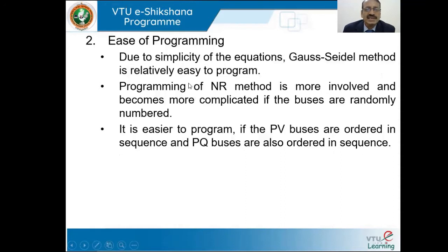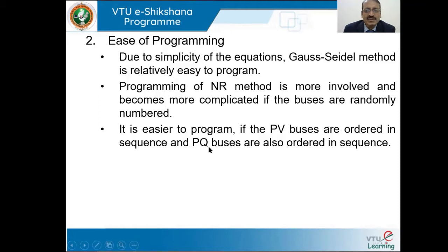Ease of programming: due to simplicity of the equations, the Gauss-Seidel method is relatively easy to program. Programming of the NR method is more involved and becomes more complicated if the buses are randomly numbered. It is easier to program if PV buses are ordered in sequence and PQ buses are also ordered in sequence.